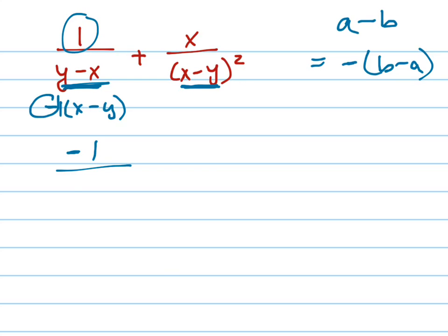So that's a negative 1 over X minus Y plus X over X minus Y squared. Now you'll see that in order to add these two things, I need a common denominator. And I have only one here and I have two there, so I need to multiply this by another X minus Y.